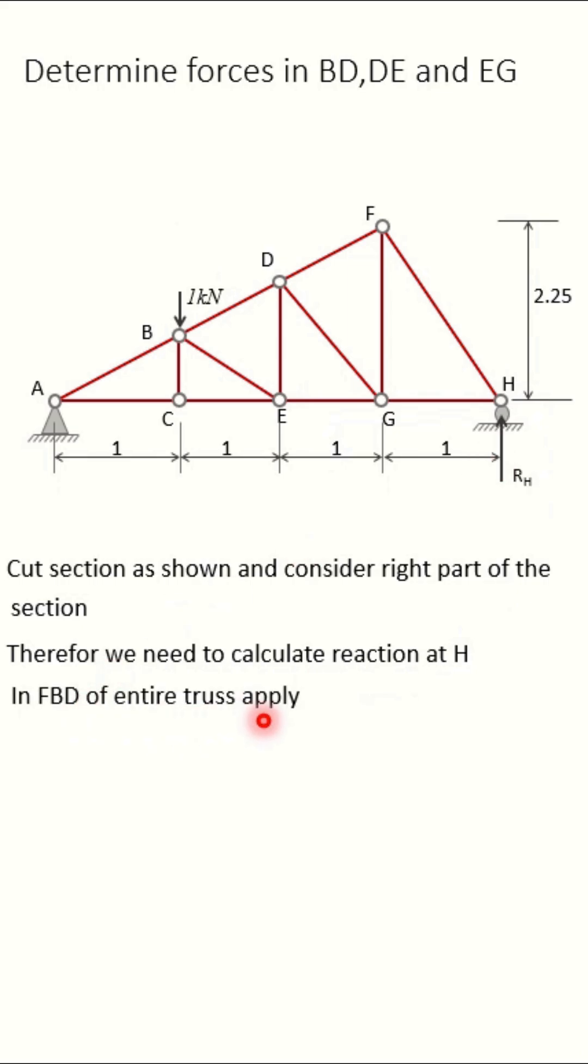In FBD of entire truss, apply sigma Ma equals zero. This will become one into one clockwise positive. RH anticlockwise into four equals zero. Therefore, RH equals 0.25.